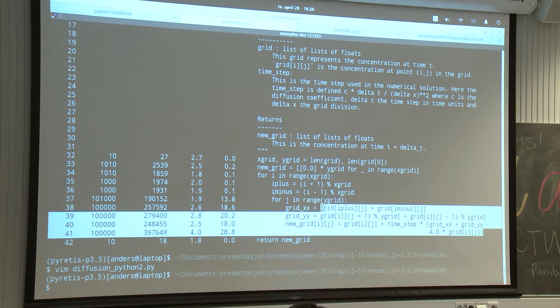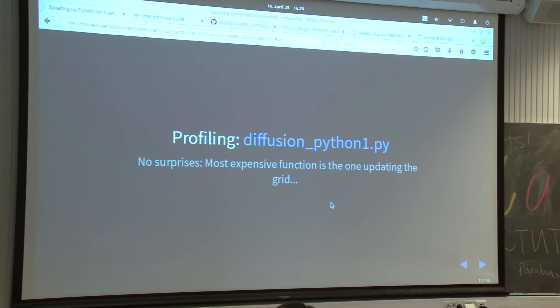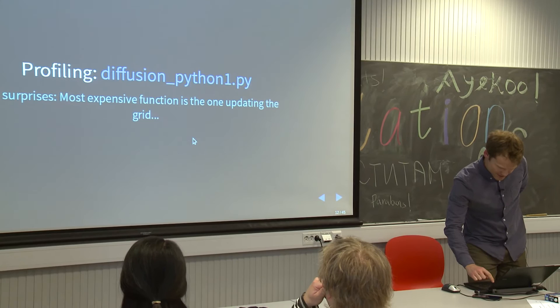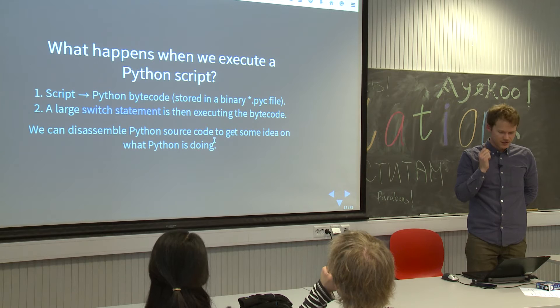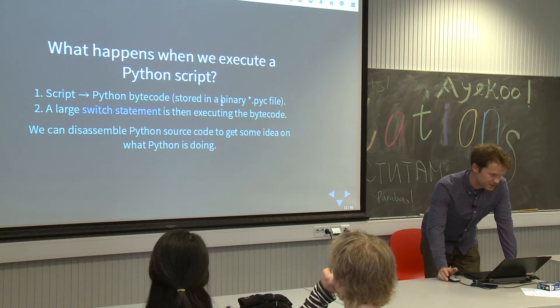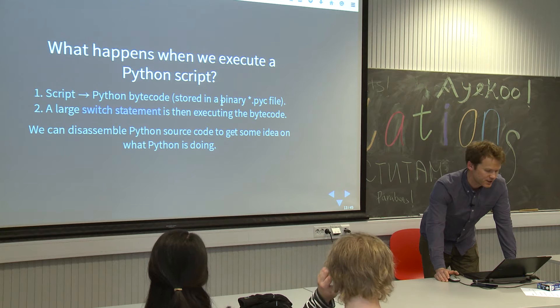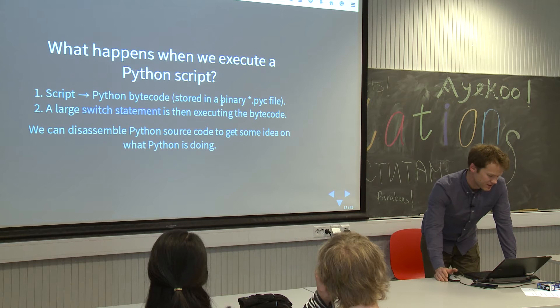No surprises so far. The most expensive function is the one that's actually doing all the work — what I would have guessed beforehand. Then you might ask: why is this so slow? It's not doing anything particularly fancy, just adding and multiplying some numbers. The answer is that Python is doing some extra work. When you execute a Python script, it's turned into Python bytecode, and that is then executed by CPython — an implementation written in C. It will look up the bytecode in a big switch statement and try to figure out what the different commands mean.